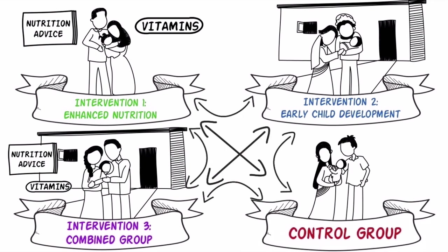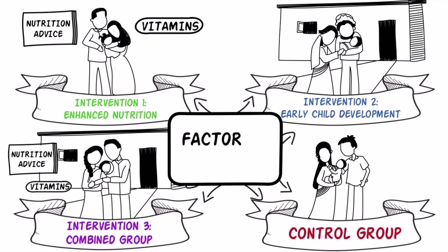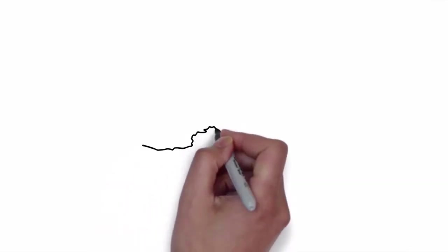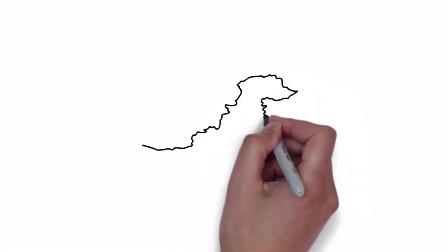This design, in which a third intervention group receives both interventions whilst the other two only receive one, is called a factorial design. The inclusion of this third group allows us to study the individual effect of all the interventions, as well as their interaction with others. A factorial design can have a number of groups and variables and is not limited to the combination shown in our example.